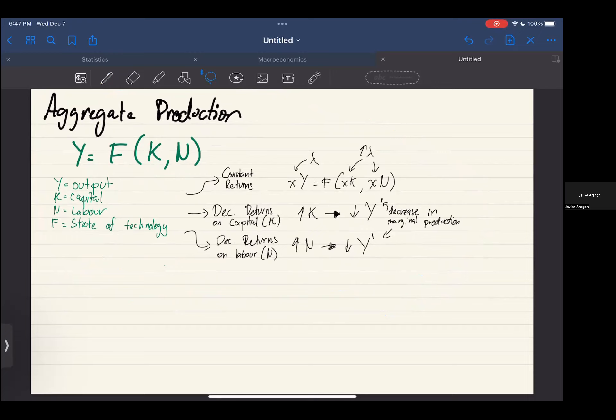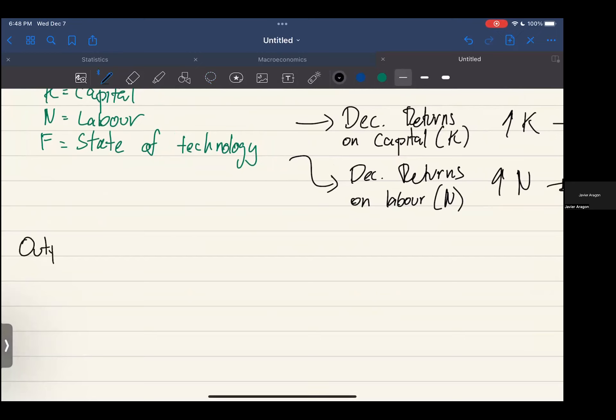Let's actually move this a bit. The book basically tells you about this thing called the output per worker to capital per worker relation.